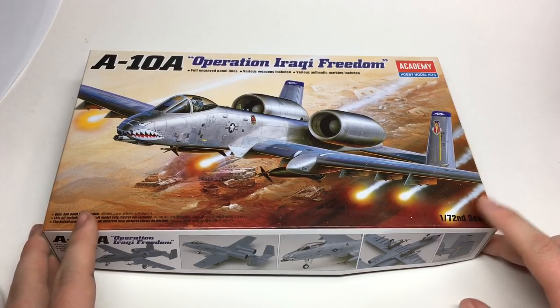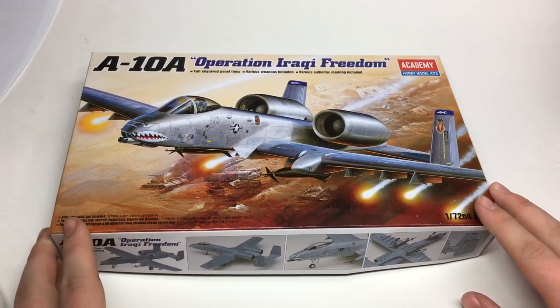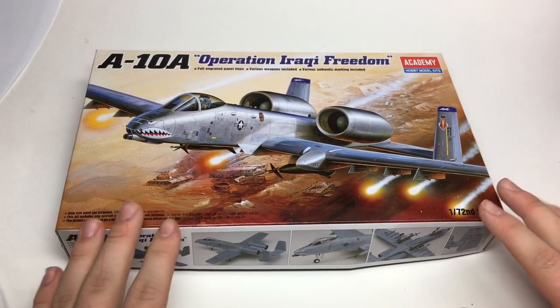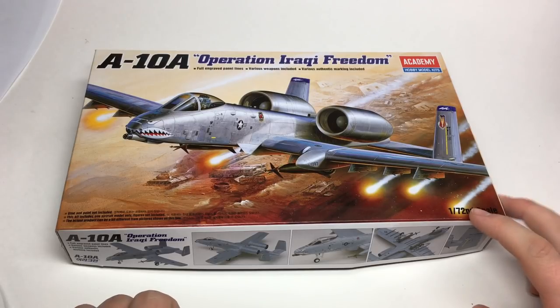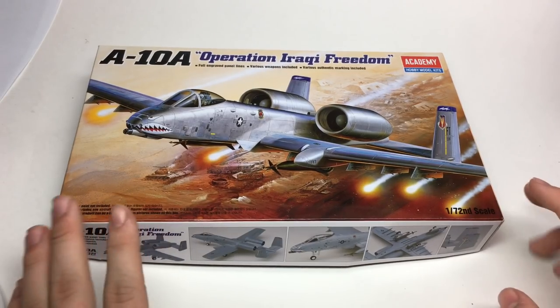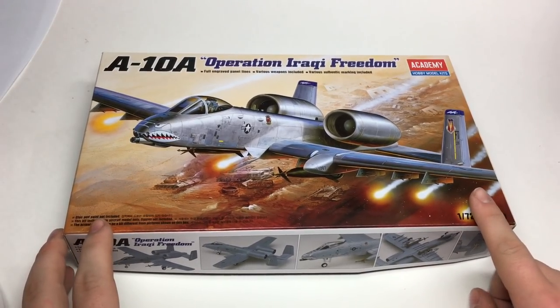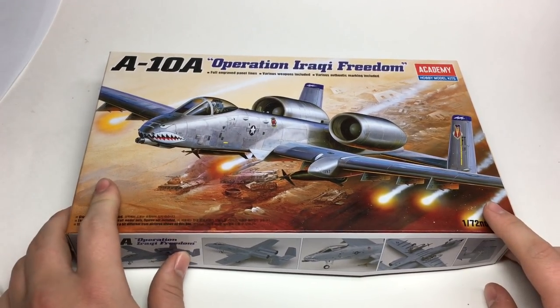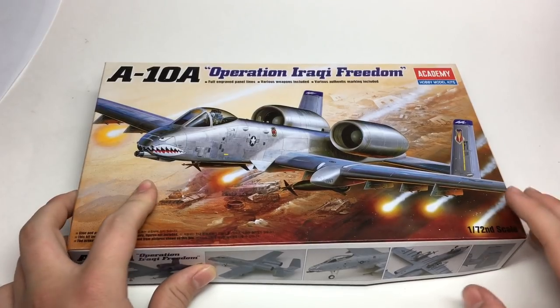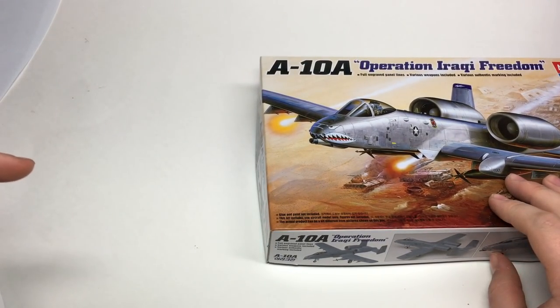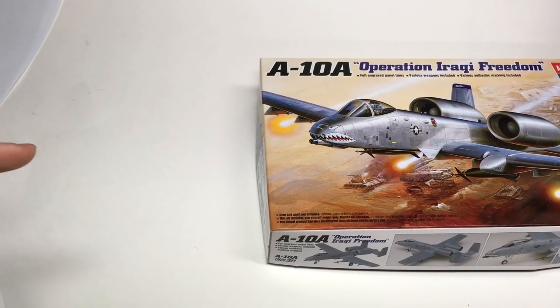That is the Academy 1:72nd scale A-10A. Now I haven't built it yet, obviously, but from what I've seen in the kit, looking at the shapes and the details, and looking at other 1:72nd scale A-10s, I have to say that if you want an A-10 in 72nd scale, this kit is probably going to be your best bet. Alright, once I get around to building this kit, I will be sure to put the video here. Thanks, and I will see you guys next time.